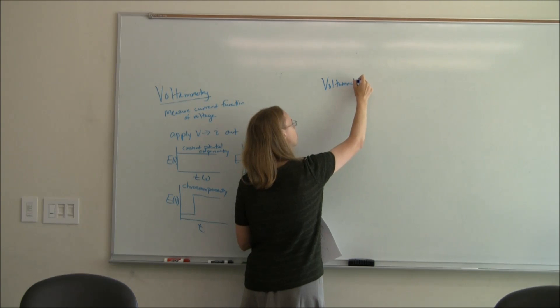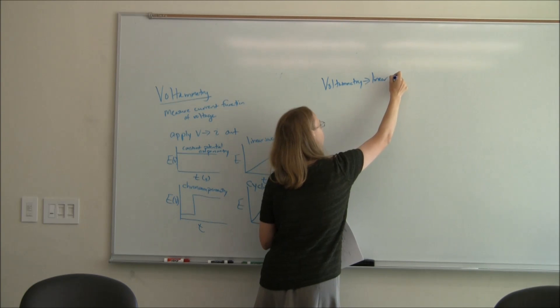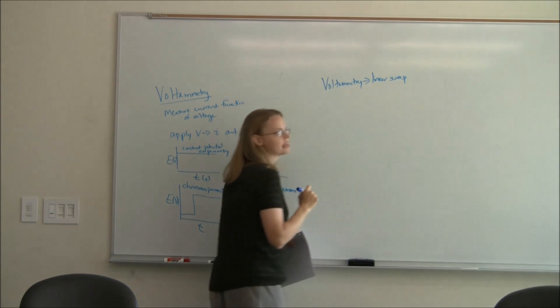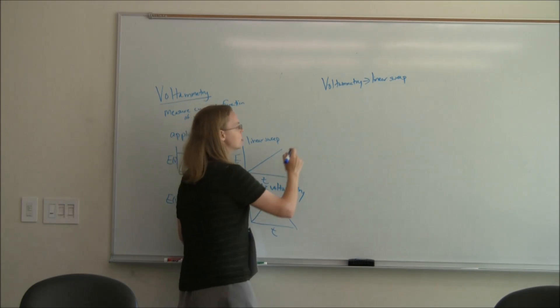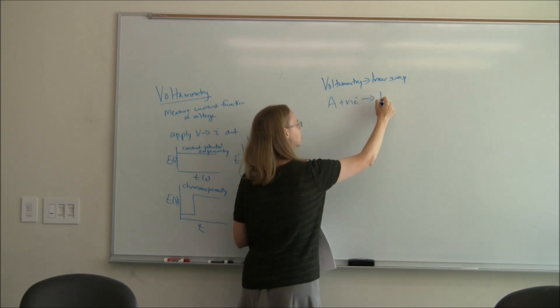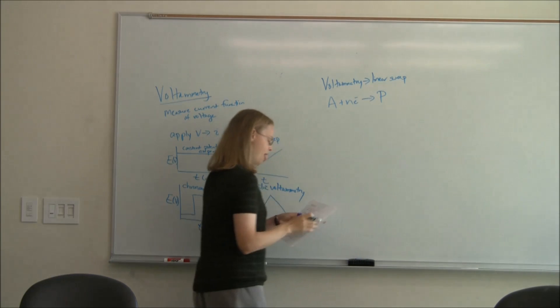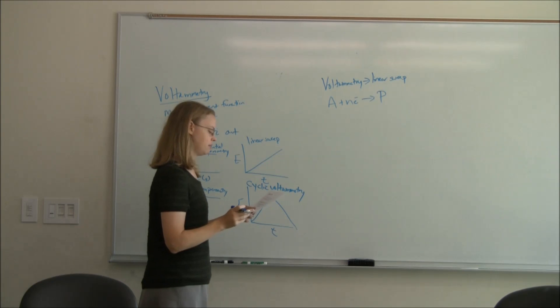As I said, we're going to start with kind of linear sweep, only meaning we're not going to go back down, we're just going to scan up. Same thing in cyclic voltammetry. So let's say we start with molecule A and we do a reduction reaction. A is going to gain electrons and going to go to P. So A plus N number of electrons goes to P.